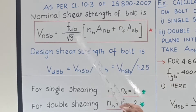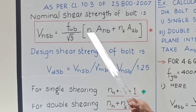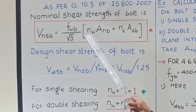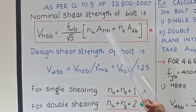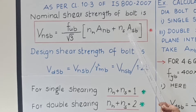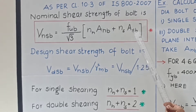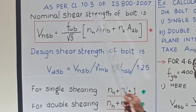To repeat: f_ub is the ultimate stress in the material of the bolt. n_n is the number of shear planes intercepting the threads. n_s is the number of shear planes which do not intercept the threads. A_nb is the net tensile area of the bolt, i.e., the area at the root of the threads — this is the smaller area. A_sb is the plain shank area of the bolt where there are no threads, calculated as pi·d²/4 where d is the nominal diameter of the bolt.